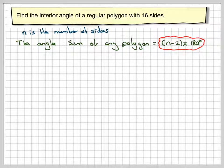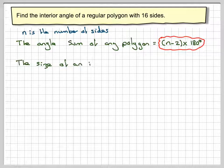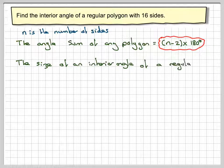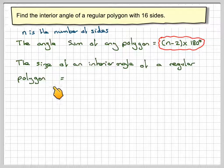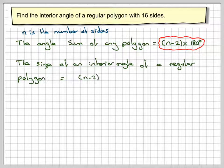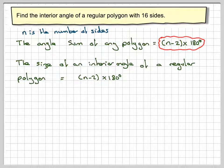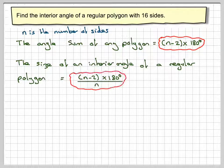n is the number of sides. Now, the size of an interior angle of a regular polygon, regular means all the sides are the same, is going to be n minus 2, the angle sum, divided by the number of sides, which is n.